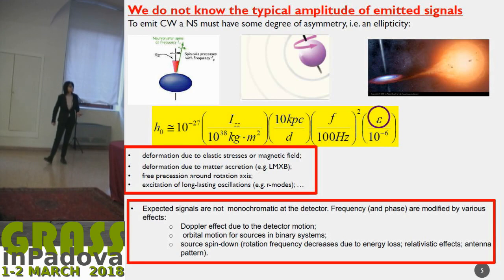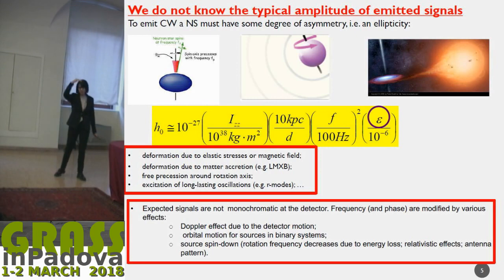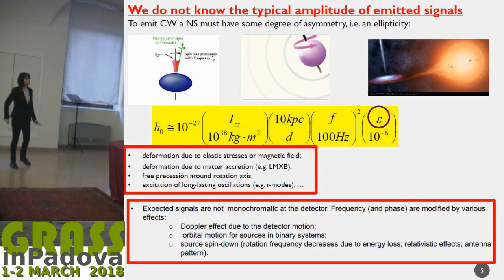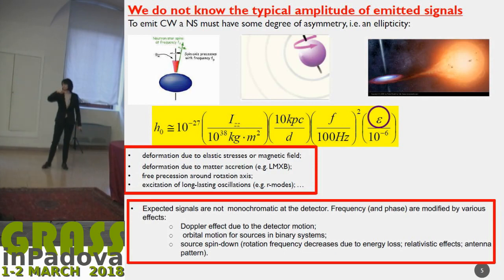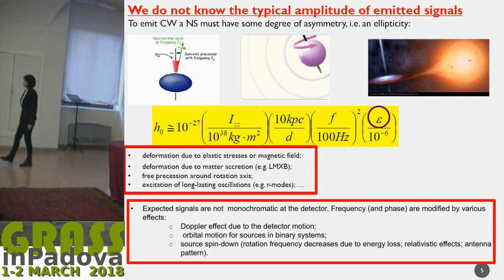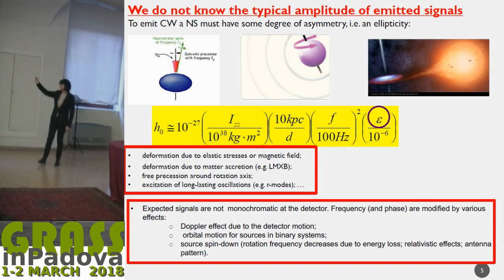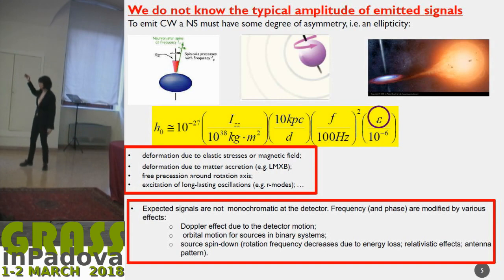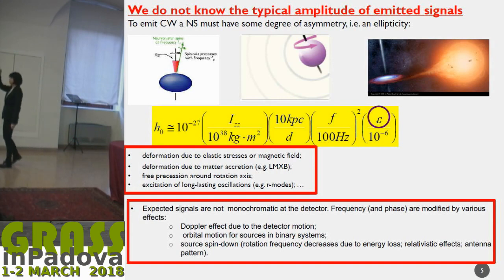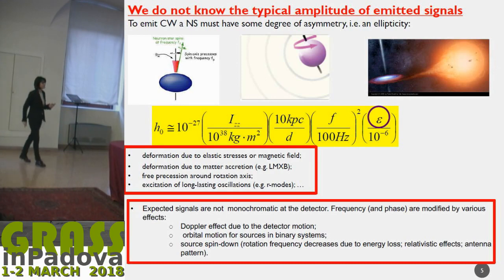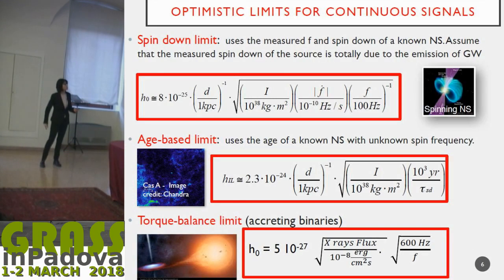In the analysis, we have to consider the fact that the signal, which is quasi-monochromatic at the source with a linearly decreasing frequency, is modified on Earth by the Doppler effect due to Earth's motion. This is the factor which makes the search computationally heavy in case you don't know the position of the source, because you have to define a grid, divide the sky into many grids, and do the search for all positions by removing the Doppler effect differently for each sky position.